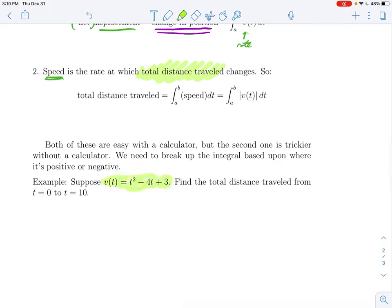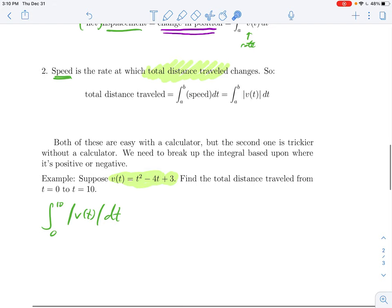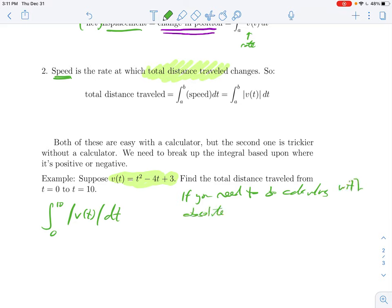And remember, speed is just the absolute value of velocity. And both of these are very easy on a calculator. You can do definite integrals. You can type in absolute value bars. So when you're doing a definite integral and you have your calculator, just type it in. Don't prove to people that you can do it another way. Just get the answer, especially if absolute values are involved. But it is possible to do an absolute value integral by hand. But you have to be careful. So let's look at a specific example. Suppose I give you this velocity function.